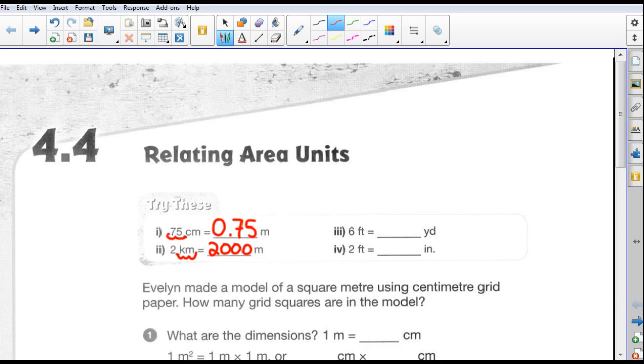Which means we're going to have 2,000 meters is the same as two kilometers. Number three, six feet is equal to how many yards? Well, we know that there are three feet to a yard. So we take six, we divide it by three. We do six divided by three and that's just equal to two. So we can say six feet is the same as two yards.